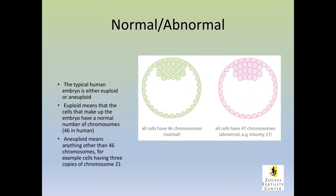When we run testing through Next Generation Sequencing, we basically come up with two polar opposites. You have a situation where all 10 cells that were removed are normal, and on the other end of the spectrum, all 10 cells are abnormal. This is how we end up with a label of an embryo that's normal on testing or abnormal — normal has 46 chromosomes, whereas abnormal is going to be either missing a chromosome or would have an extra chromosome present.